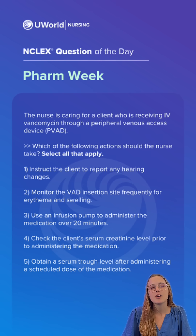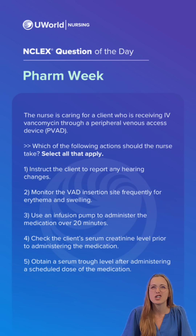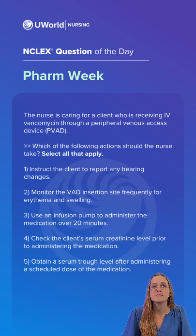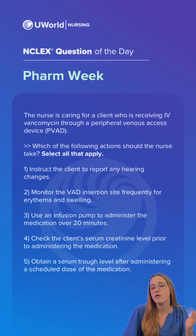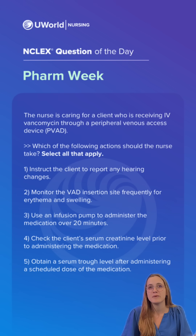The incorrect options: option 3 — vancomycin should be infused over at least 60 minutes to decrease the risk, not 20. And option 5 — a trough level should be obtained approximately 15 to 30 minutes before, not after, administering IV vancomycin.